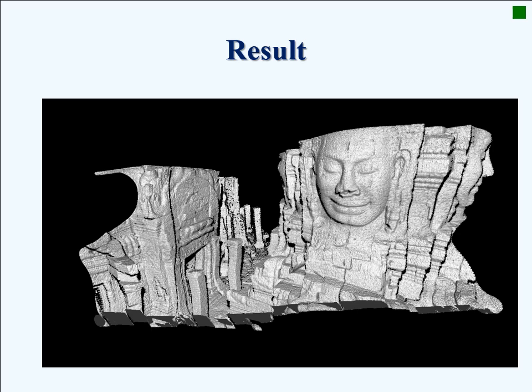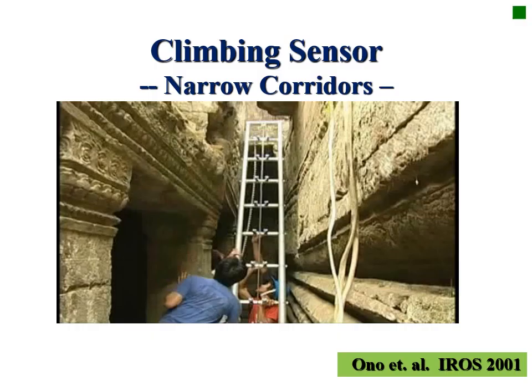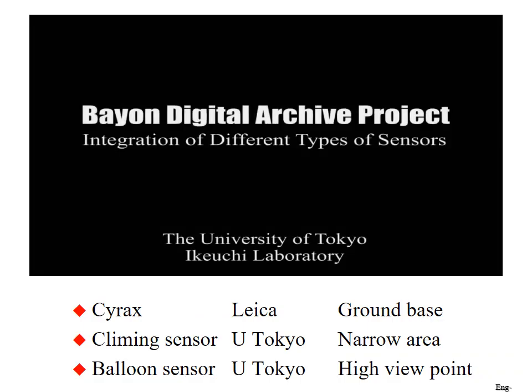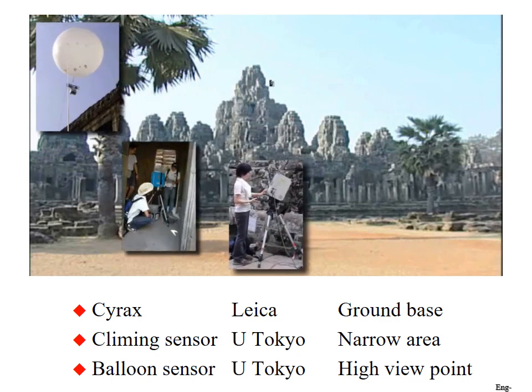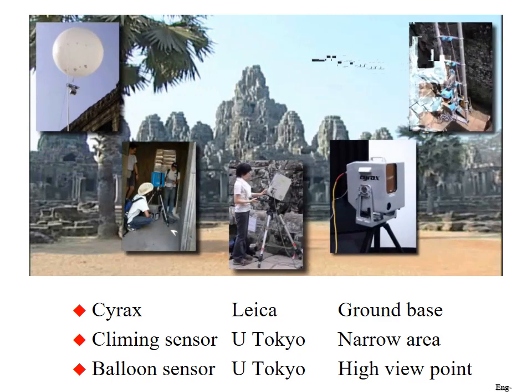Those distorted data are rectified as shown. We have also developed various other sensors to obtain range data of narrow areas. In order to scan large architectural structures such as the Bayon Temple, we have to use different types of sensors depending on the location of objects in the site.